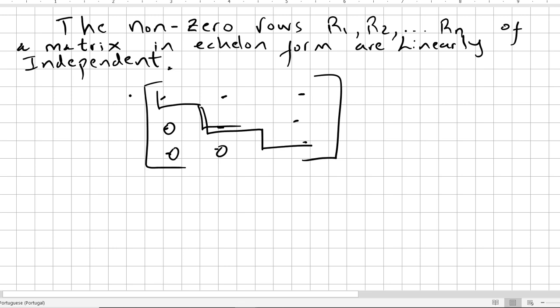So this row is a non-zero one, the second row is a non-zero one, the third one too. It's in echelon form, so the rows are linearly independent.